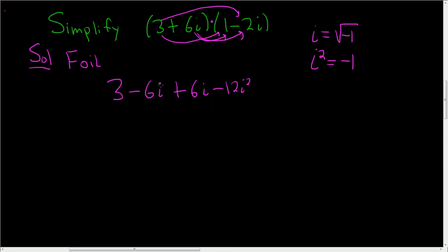And that's it. So let's keep going. These cancel. So we get 3 minus 12 times negative 1. So this is 3 plus 12 equals 15.